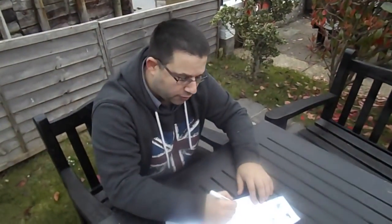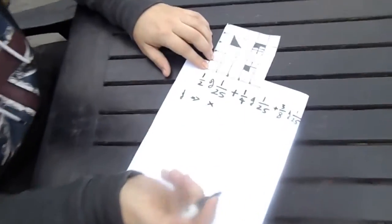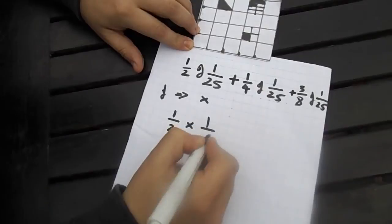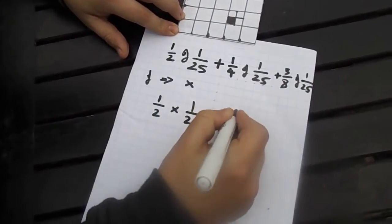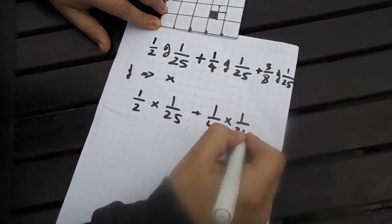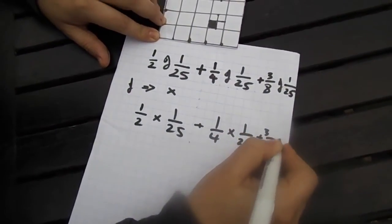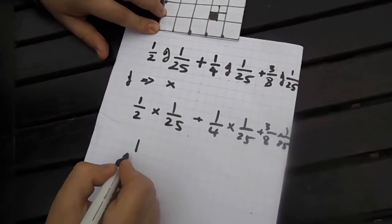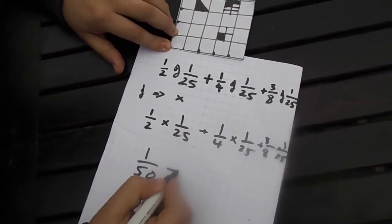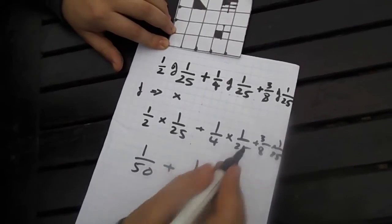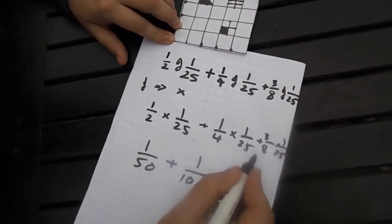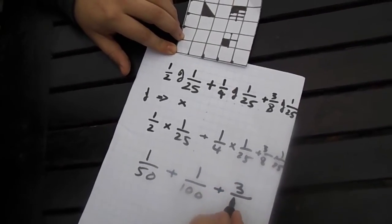In my previous video, we did talk about implying multiplication. So all I've got to do here is be ruthless and multiply. 1 times 1 is 1, 2 times 25 is 50, plus 1 times 1 is 1, 4 times 25 is 100, plus 3 times 1 is 3, over 8 times 25 is 200.